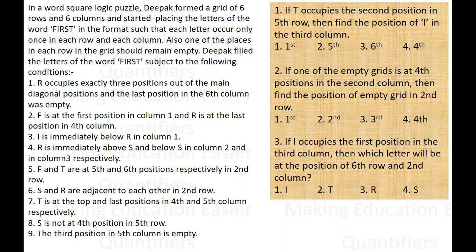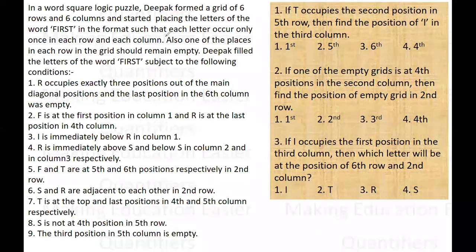The grid is of six rows and six columns, but the number of letters in the word FIRST are five. So in every row, exactly one grid will remain empty because the letters are five and the columns are six — so in every row, one grid should remain empty.